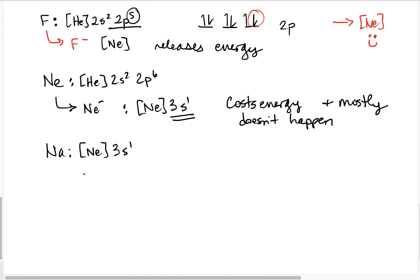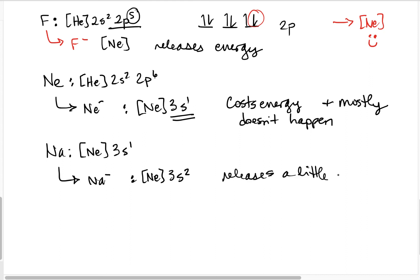Sodium is [Ne] 3s1, so if we went to sodium-minus it would be [Ne] 3s2. This is not something we observe — it releases a little energy, but generally sodium doesn't really want the electron, or at least it wants it less than other things do.